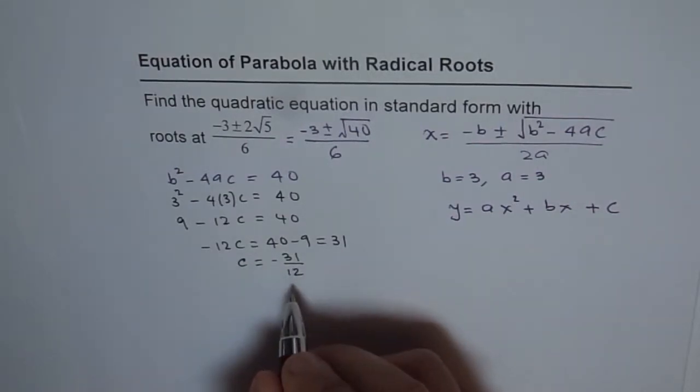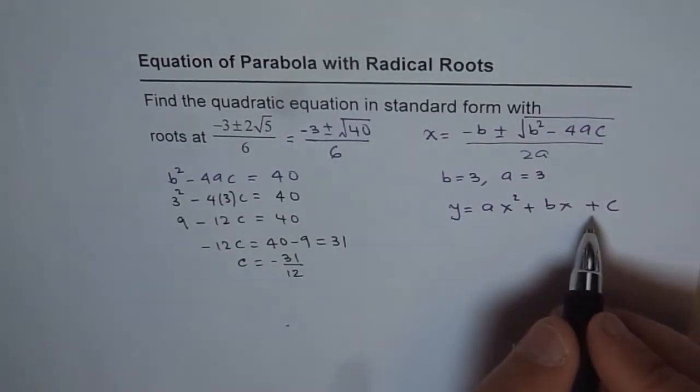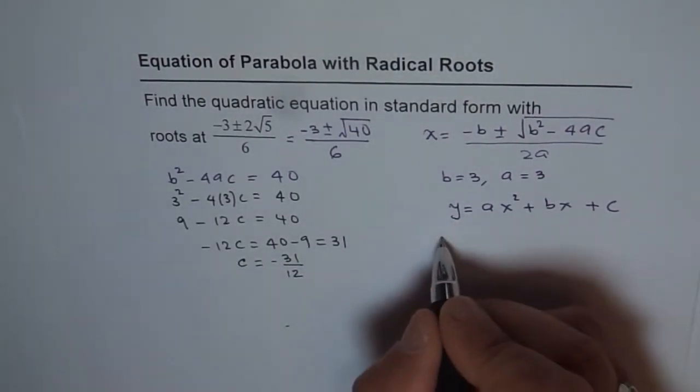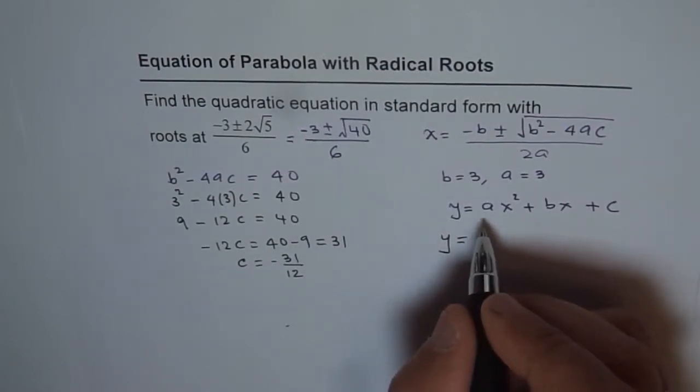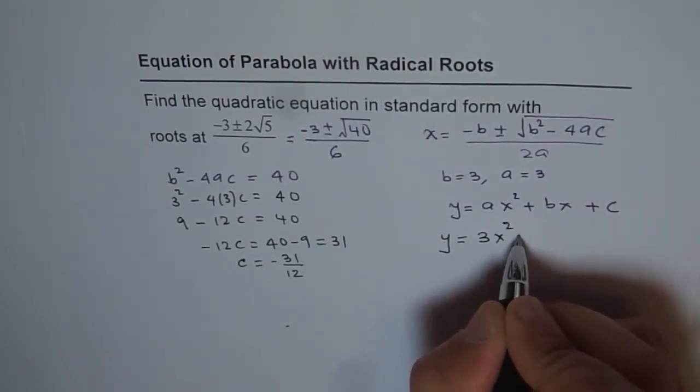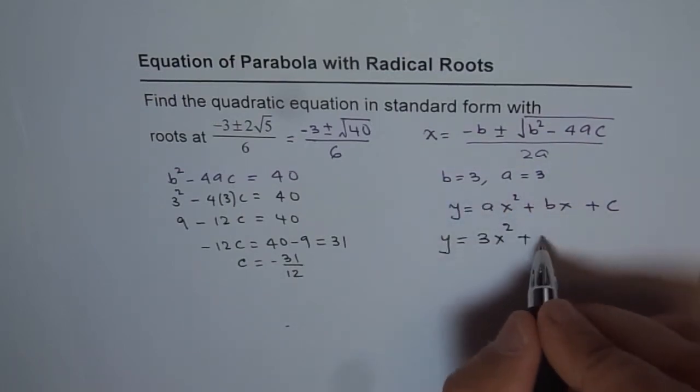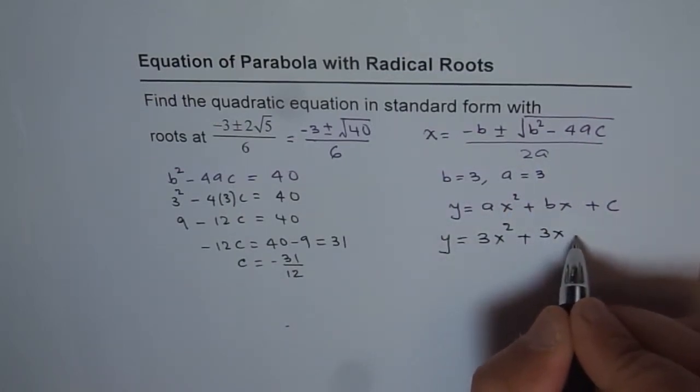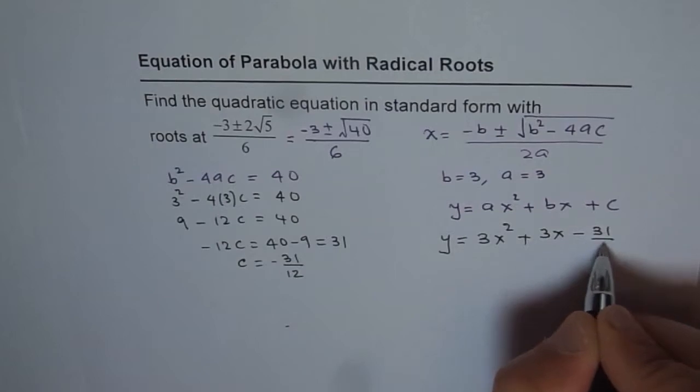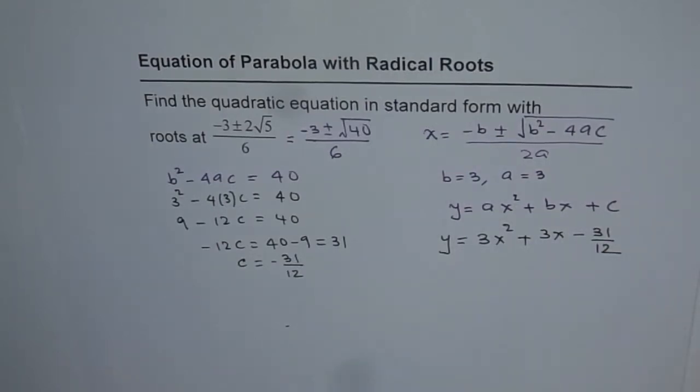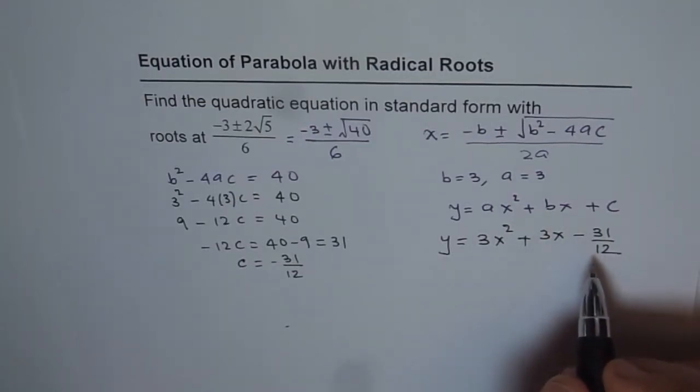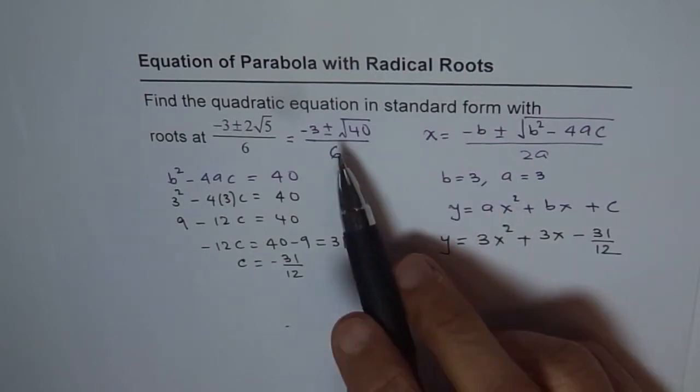Once we know the value of c, we can substitute it to get our equation: y = 3x² + 3x - 31/12. And that is how we solve such questions. I hope you find it interesting and useful for writing equations from given roots.